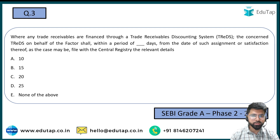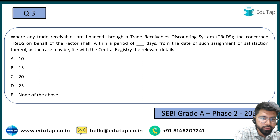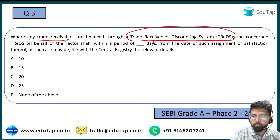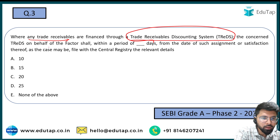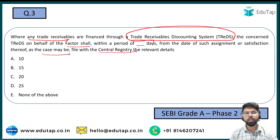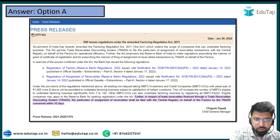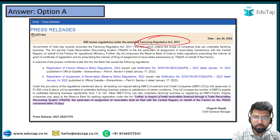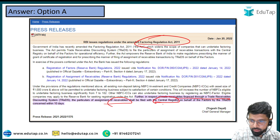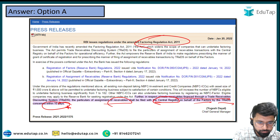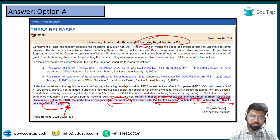The next question: where trade receivables are financed through the Trade Receivable Discounting System (TReDS), the concerned TReDS on behalf of the factor shall, within a period of dash days from the date of such assignment, file with the central registry the relevant details. This appears complex but is a current affairs question. The answer is option A — within 10 days. This is based on an RBI notification under the Factoring Regulation Act, which states that particulars of the assignment of receivables shall be filed with the central registry by TReDS within 10 days.